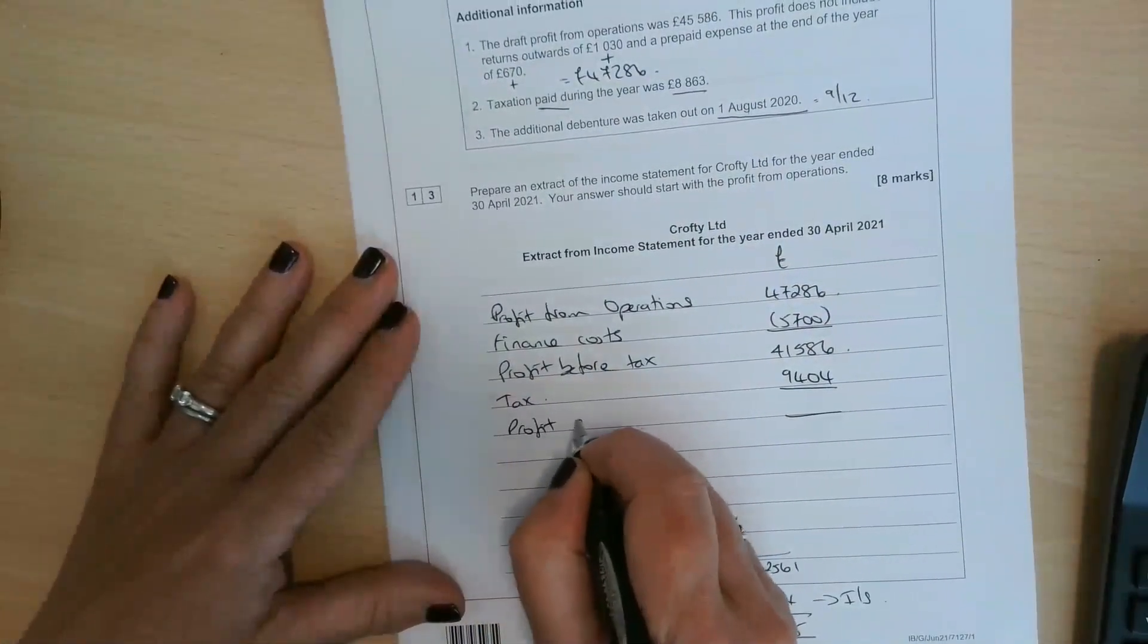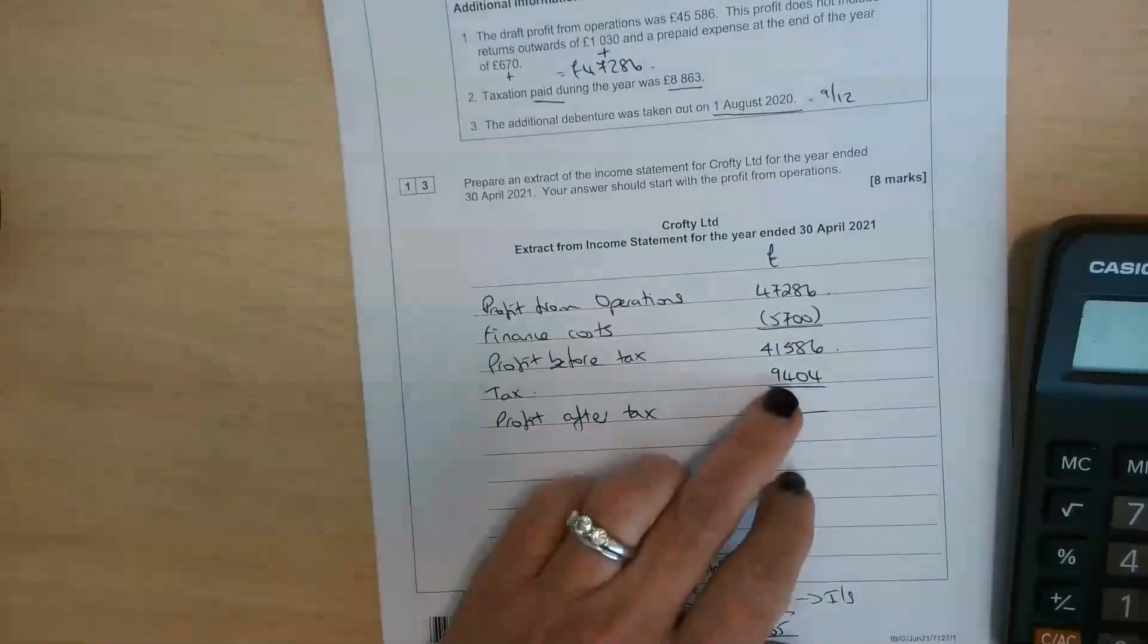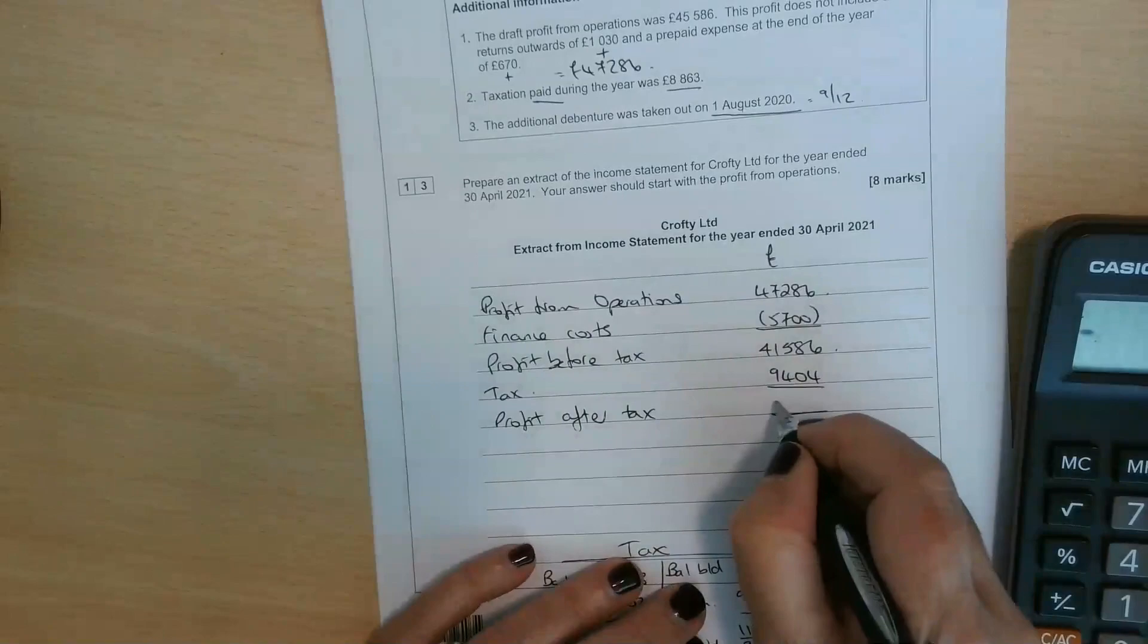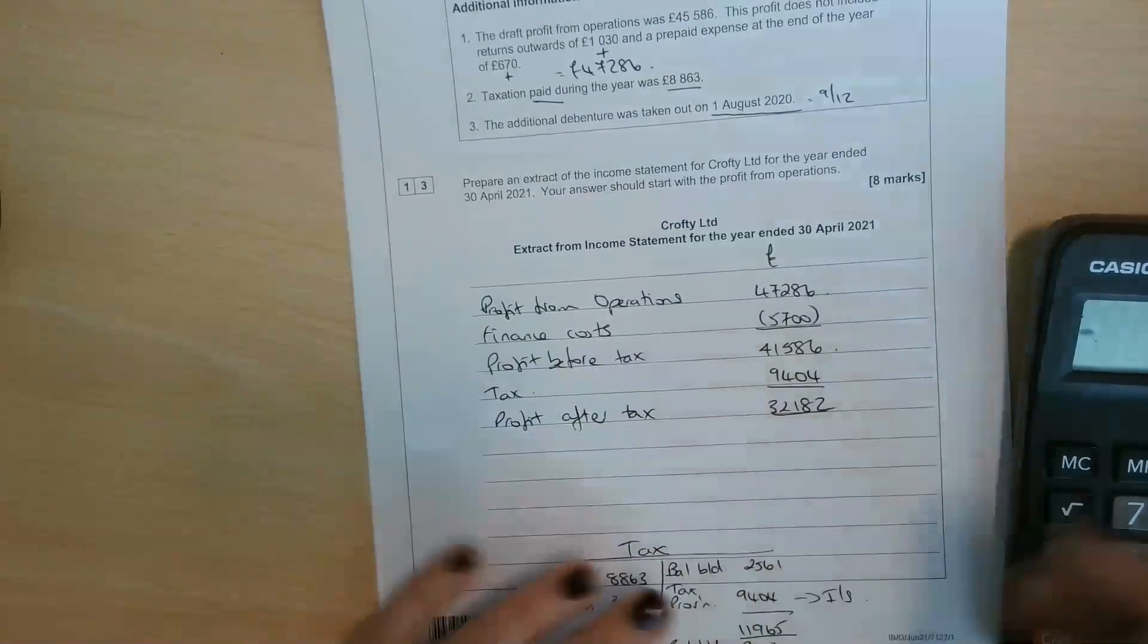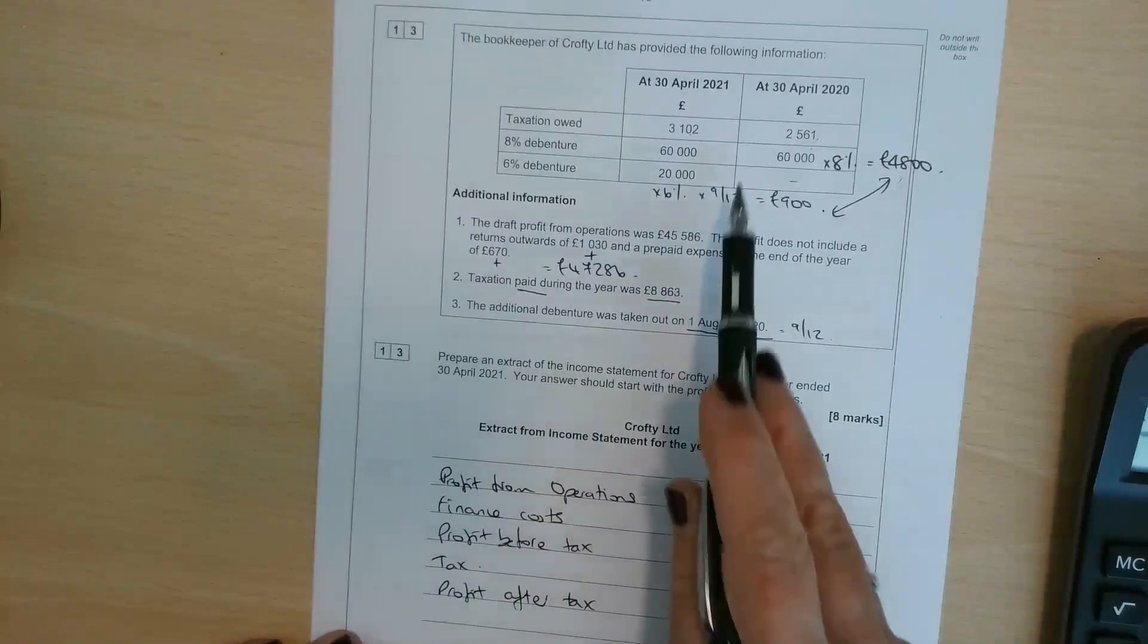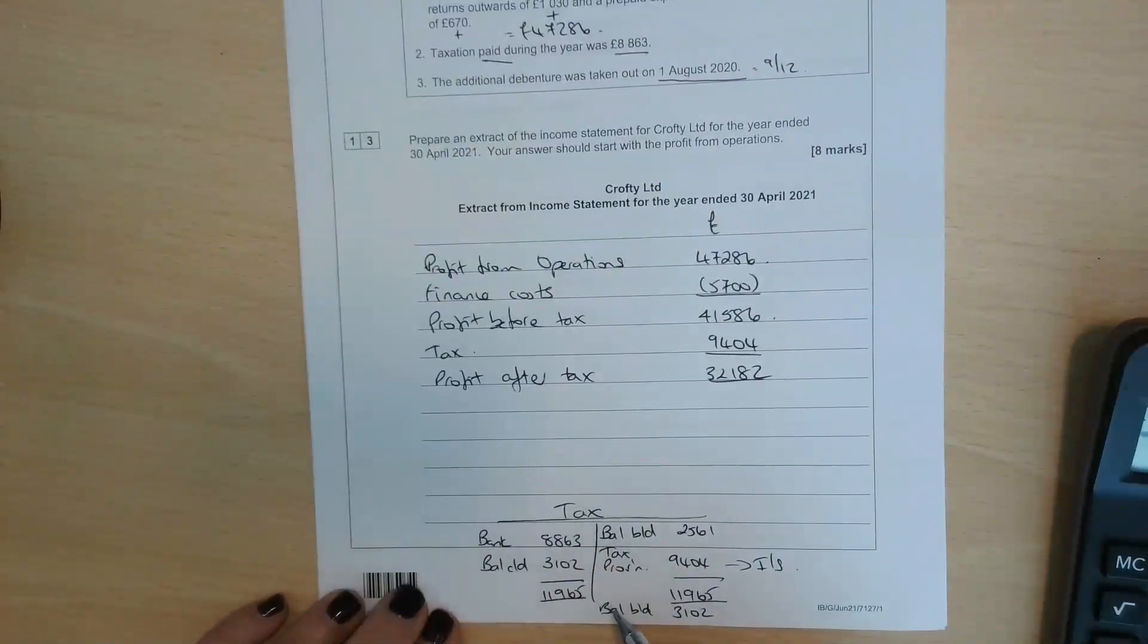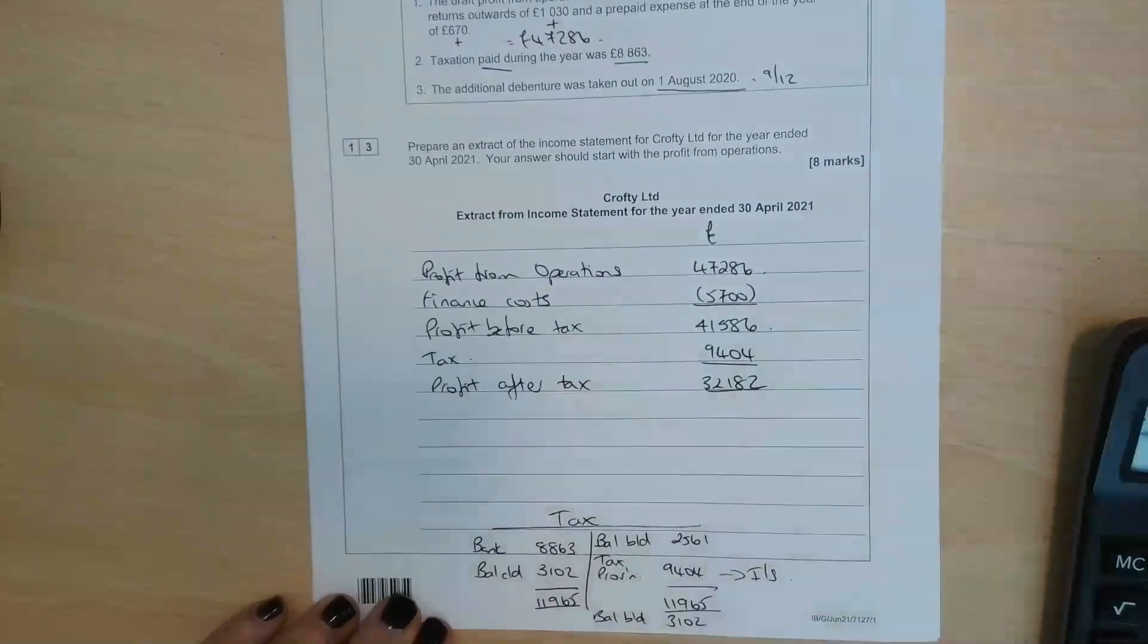That leaves us with profit after tax, the difference between those two: £32,182. Quite straightforward, but you just need to be on your toes with regards to time apportioning the interest and sorting out the tax liability account. Thanks very much for watching.